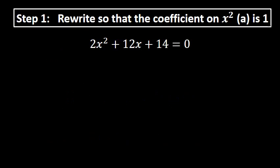Step one is to rewrite the equation so the coefficient on x squared is 1. Here the coefficient on x squared is 2, so we divide every term on both sides of the equation by 2.